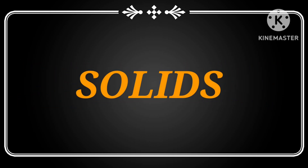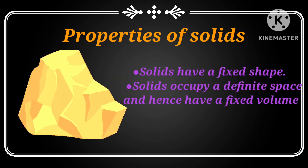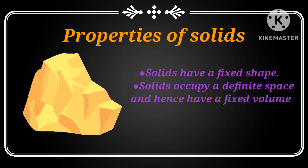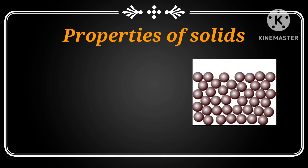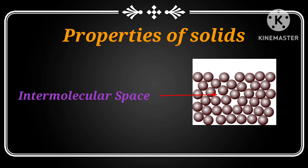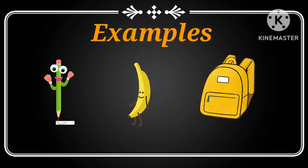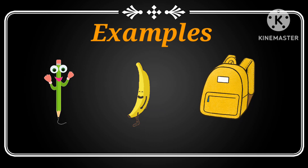Solids have a fixed shape and they occupy a definite space and hence have a fixed volume. Molecules in solids are closely packed and intermolecular space is very less. This is what gives solids a definite shape. Pencil, banana, bag are some of the examples of solids.